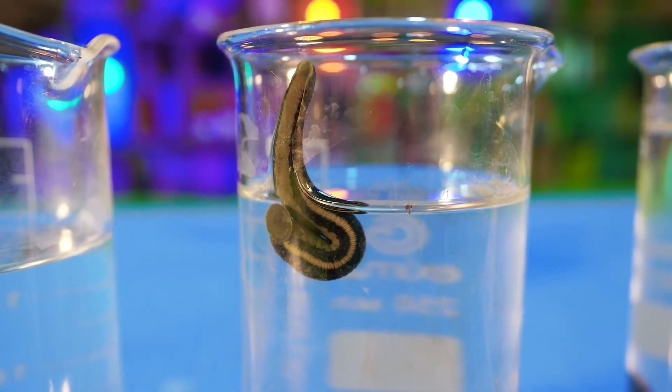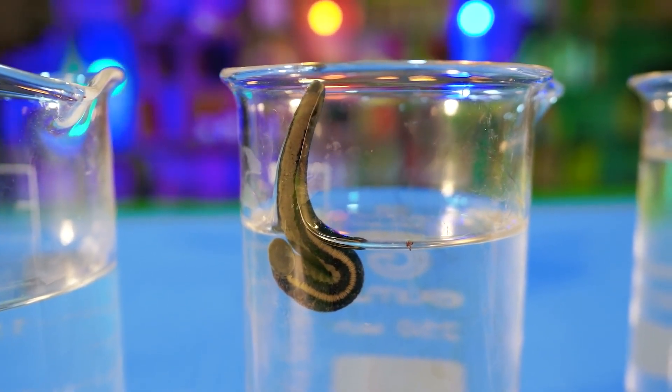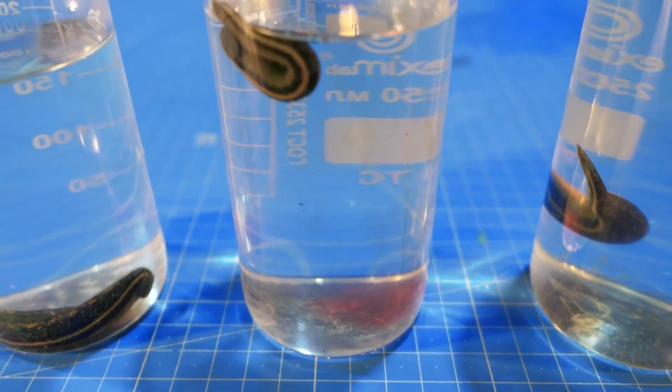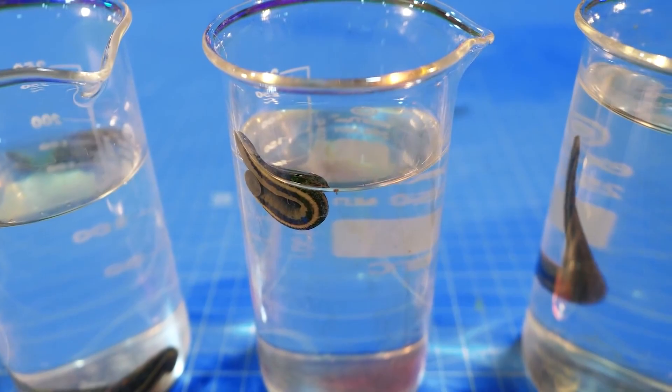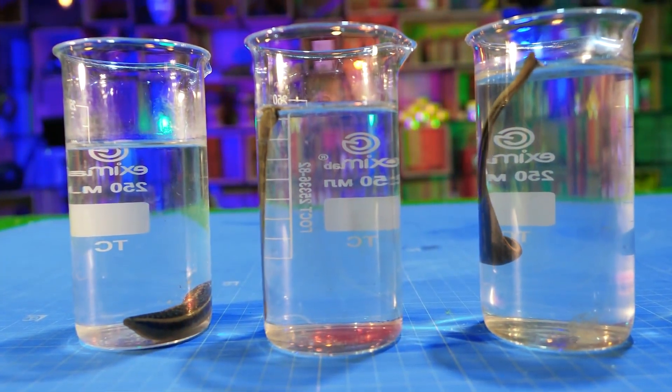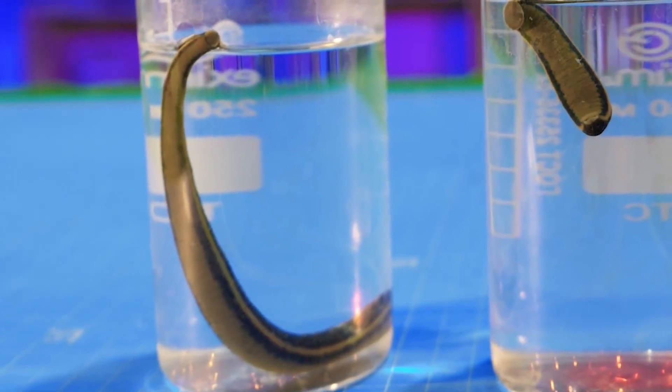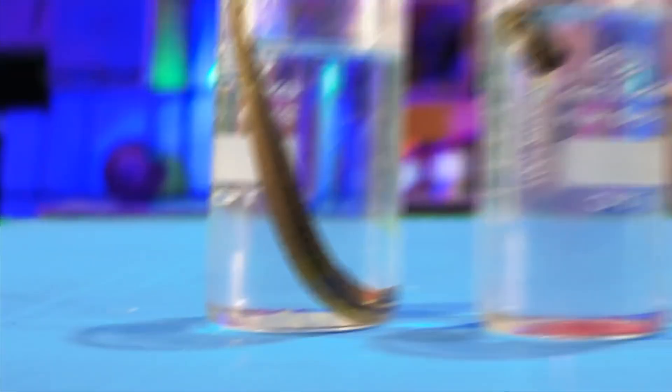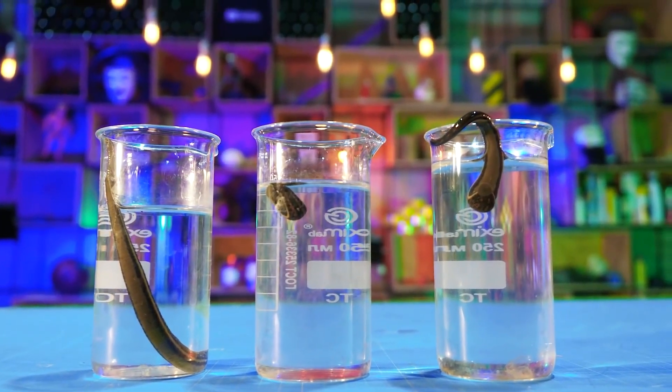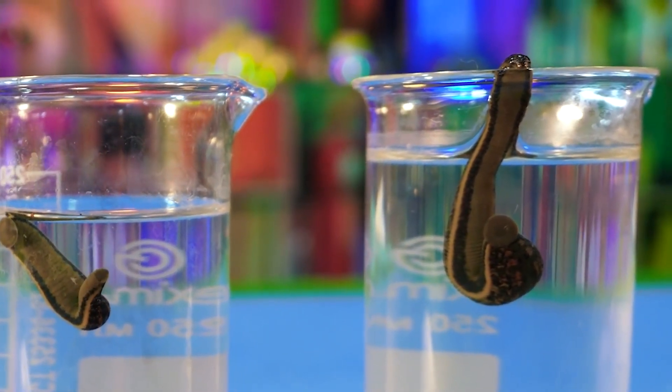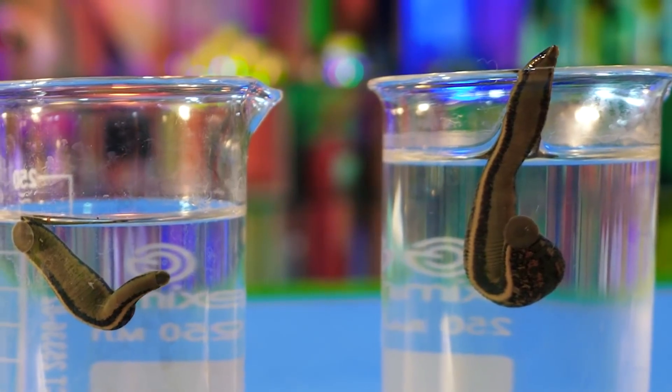The observation continued the next day. The leech which had to digest the blood with drugs has already recovered and is behaving quite normally. The only thing to note is that a blood spot is clearly visible at the bottom. Apparently, she has regurgitated and her condition has normalized. Vitya is still the calmest.